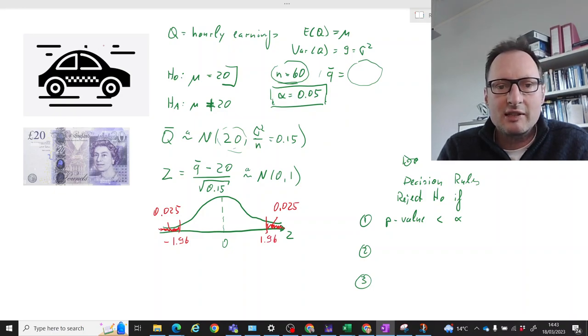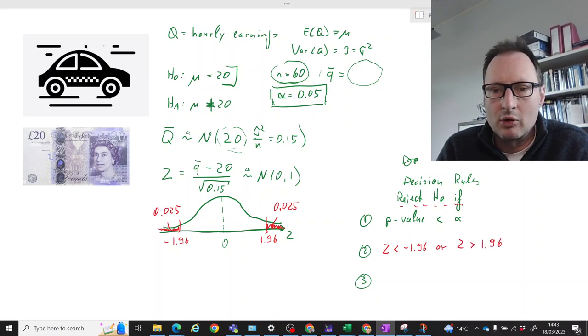So if our test statistic, once we plug in our sample mean, is smaller than negative 1.96 or larger than 1.96, then we should reject H0. So reject H0 if Z is smaller than negative 1.96 or Z is larger than 1.96. Or sometimes you will see if the absolute value of Z is larger than 1.96. That is our decision rule formulated in terms of Z.